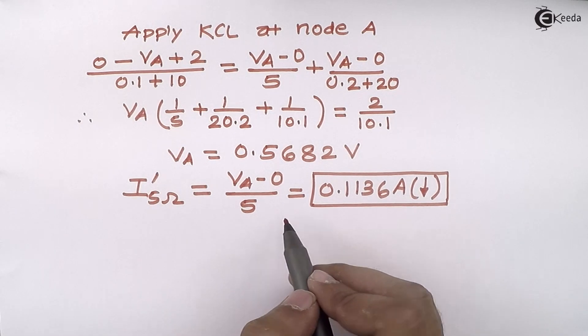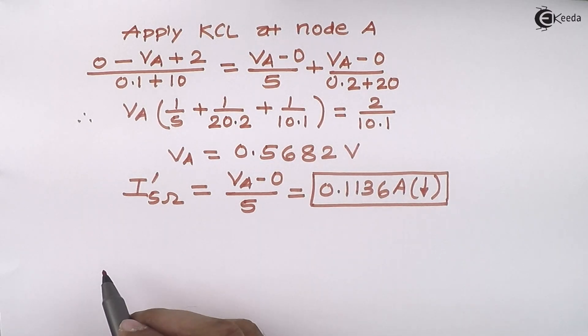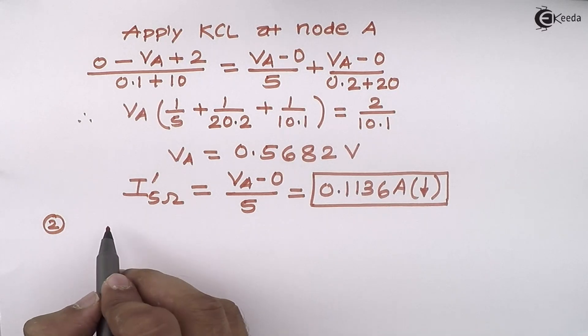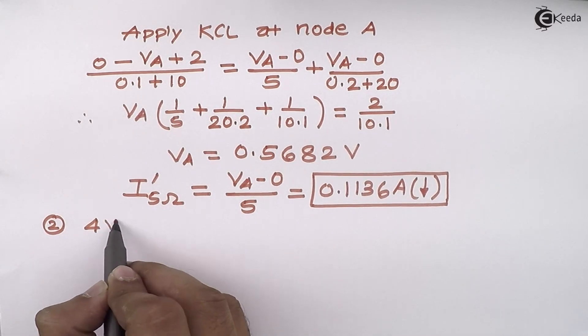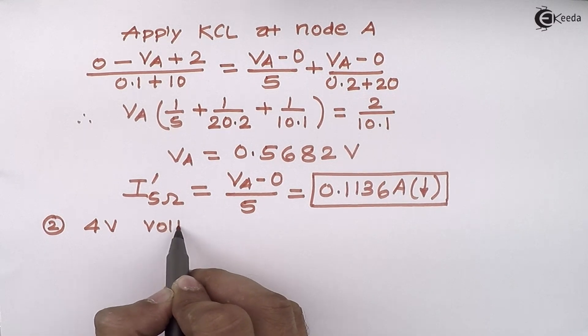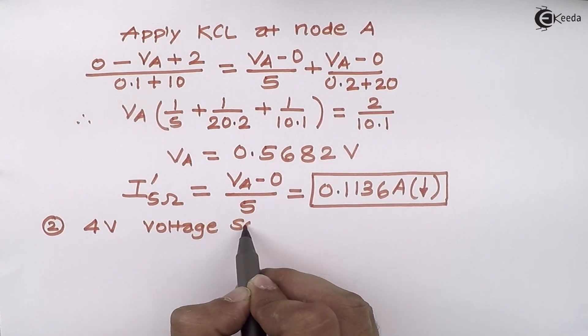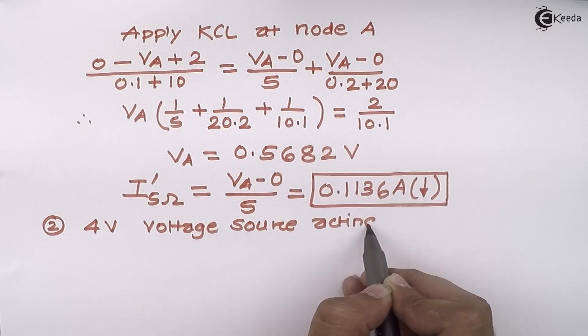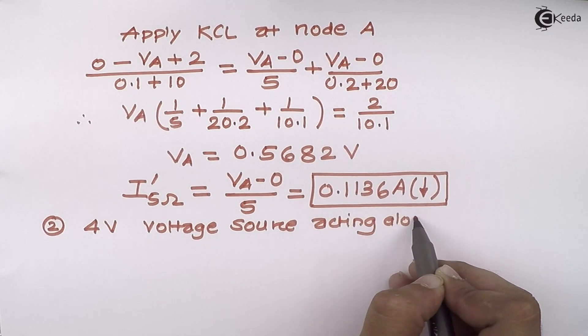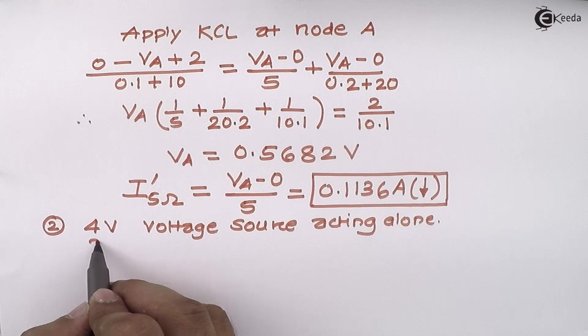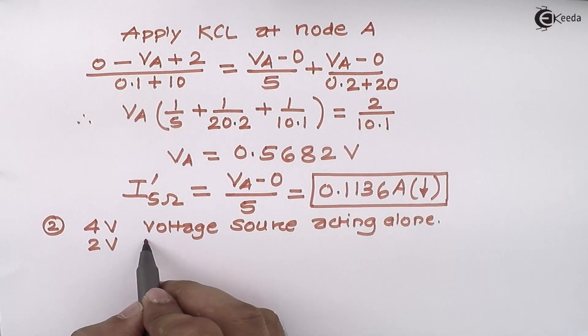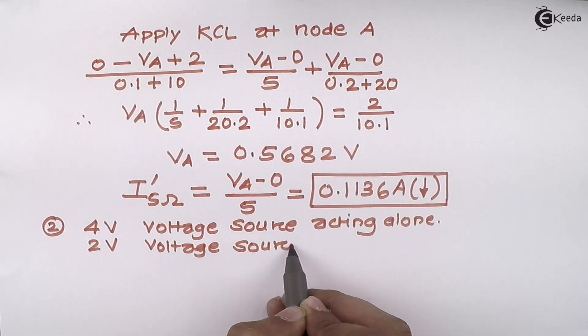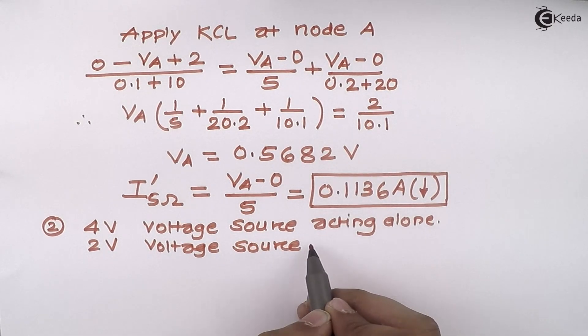For the remaining half, step two: I will consider the 4 volt voltage source acting alone. So what to do for 2 volt? The 2 volt voltage source will be short circuited.